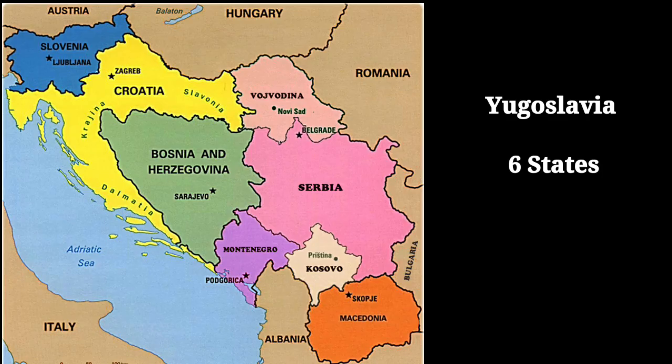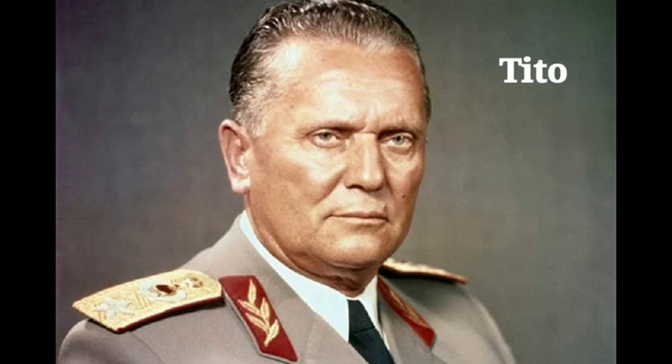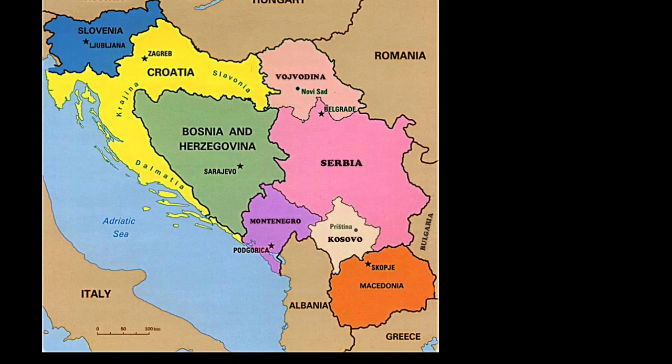The breakup of Yugoslavia also caused tremendous conflict throughout Eastern Europe. Yugoslavia had formerly been a combination of six smaller states, held together by communist dictator Tito. Following the collapse of communism, many of these states sought their own independence.